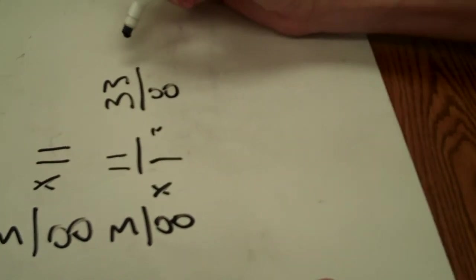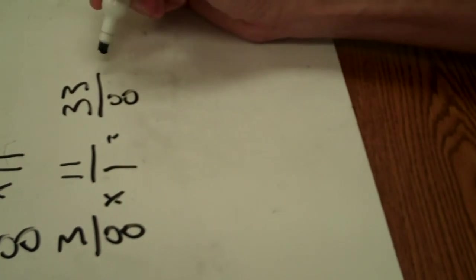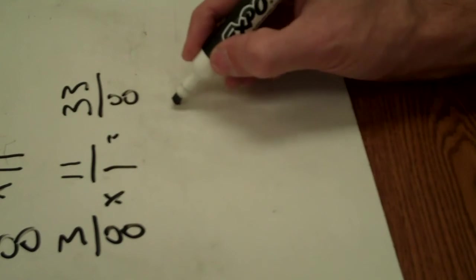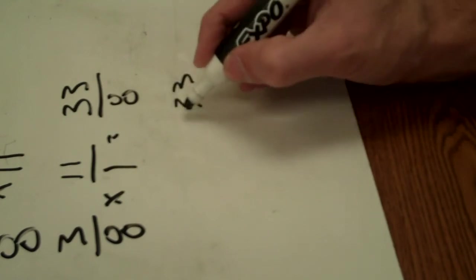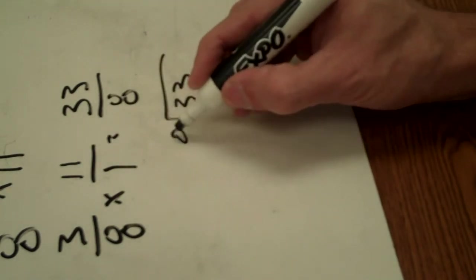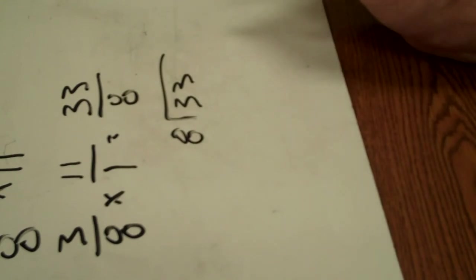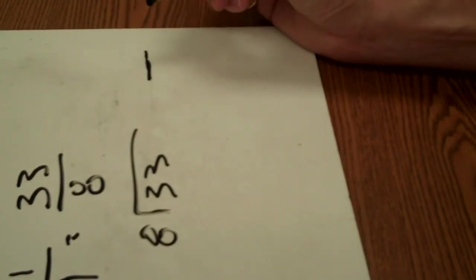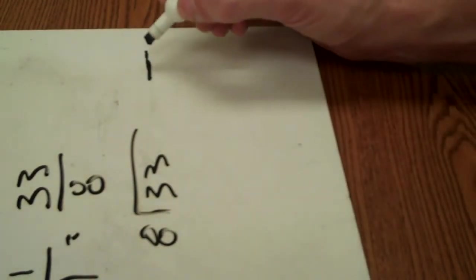That's improper because the top number is bigger than the bottom number. So, we're going to have to divide. We're going to have to divide 33 divided by 8. Now, you can go ahead and set this fraction up if you want to. You know it's going to have a fraction bar, and you know for a fact that the 8 is going to be on the bottom.